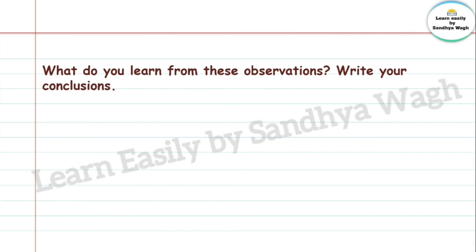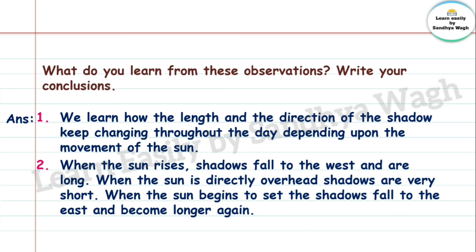At 1:30 PM the shadow is comparatively long and direction is east. At 3:30 PM the shadow is long and direction is east. Conclusion: We learn how the length and direction of the shadow keep changing throughout the day depending upon the movement of the sun. When the sun rises, shadows fall to the west and are long; when the sun is directly overhead, shadows are very short; when the sun begins to set, shadows fall to the east and become longer again.